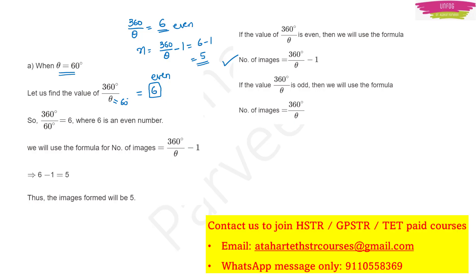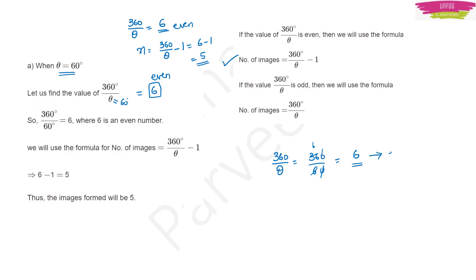Let me explain once more. I substituted θ = 60, so 360/60 = 6. This value turned out to be even, so number of images = 6 − 1 = 5. When you get an even number, subtract 1. When you get an odd number, keep the number as it is. So number of images formed here is 5.